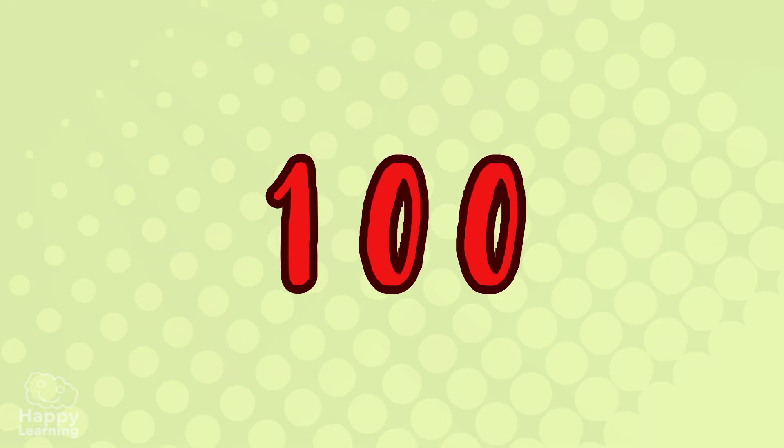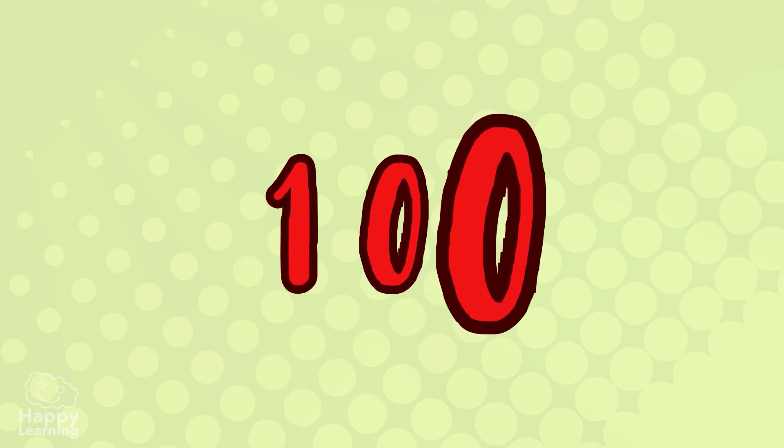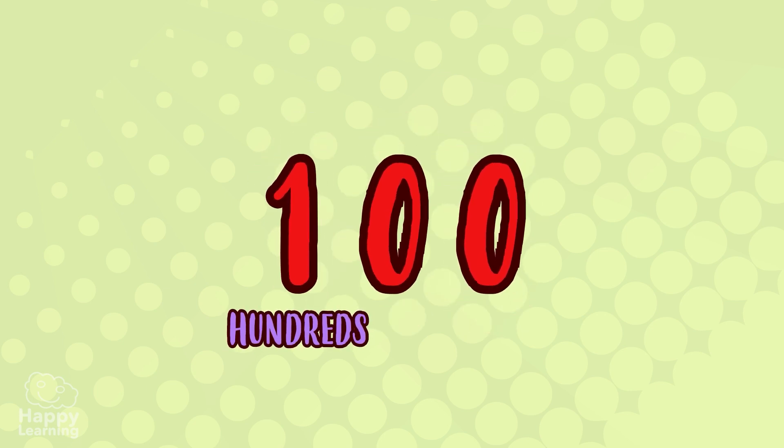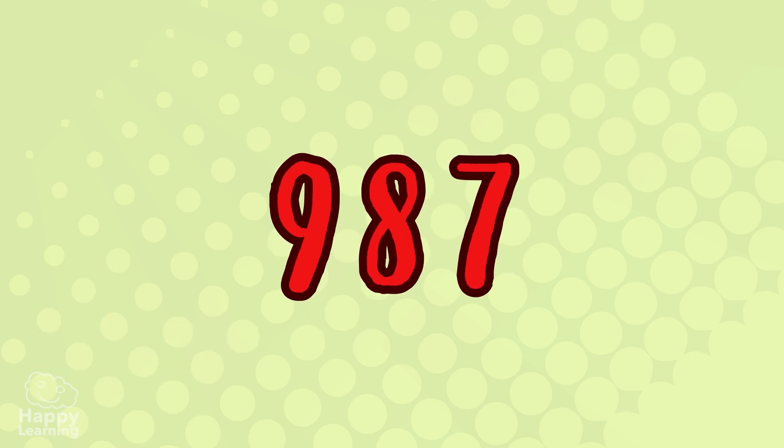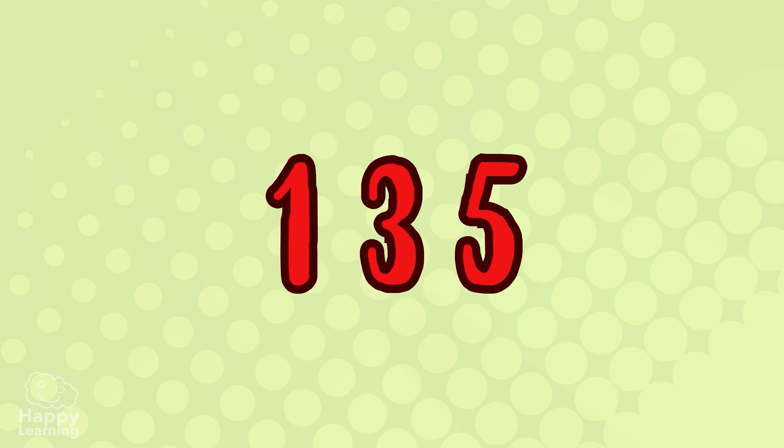The number 100 has three digits. The hundreds are written in the third position starting from the right. For example, let's write the number 135, which is equivalent to five units, three tens, and a hundred.